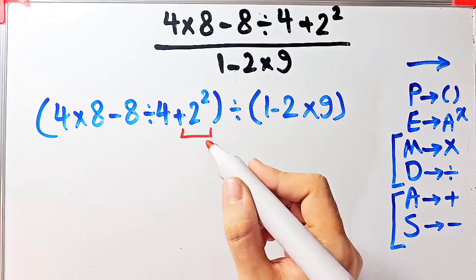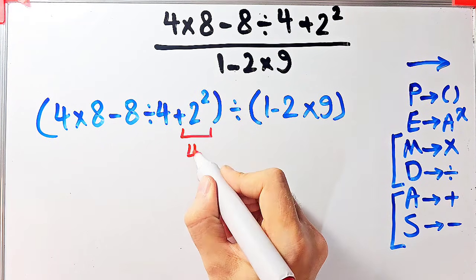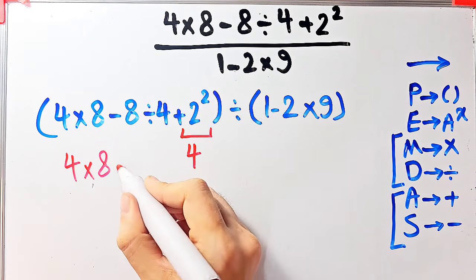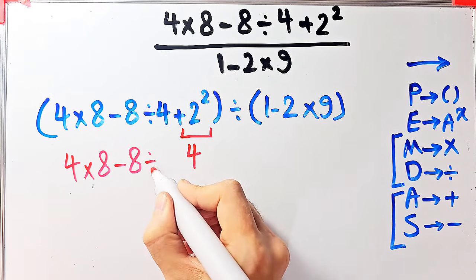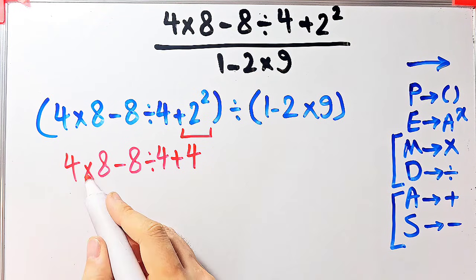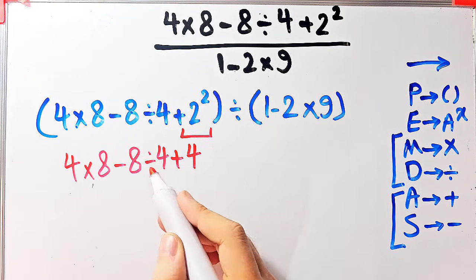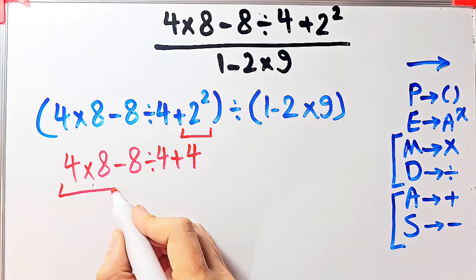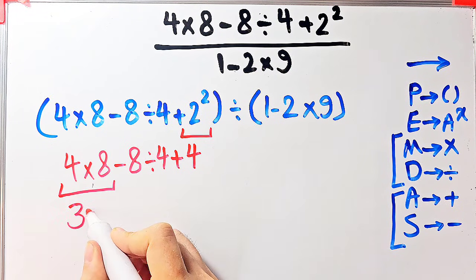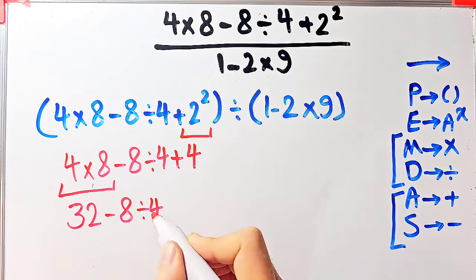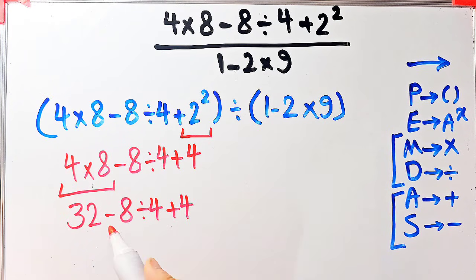After resolving the exponent, 2 to the power of 2 equals 4. Now the expression inside the parentheses is 4 times 8 minus 8 divided by 4, then plus 4. In this parentheses we have multiplication, subtraction, division, and addition. First we simplify the multiplication: 4 times 8 equals 32. Now we have 32 minus 8 divided by 4, then plus 4.